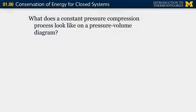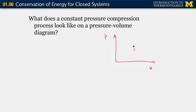We've introduced work transfer as a force applied through a distance, expansion and compression work with the P·dV expression, and the associated sign convention. Before we start the next unit, I want you to think about: for a constant pressure process, what would a diagram of this process look like on a PV diagram? Sketch for me a constant pressure compression process from some arbitrary state one to state two. That's what we'll start next time. Thank you.